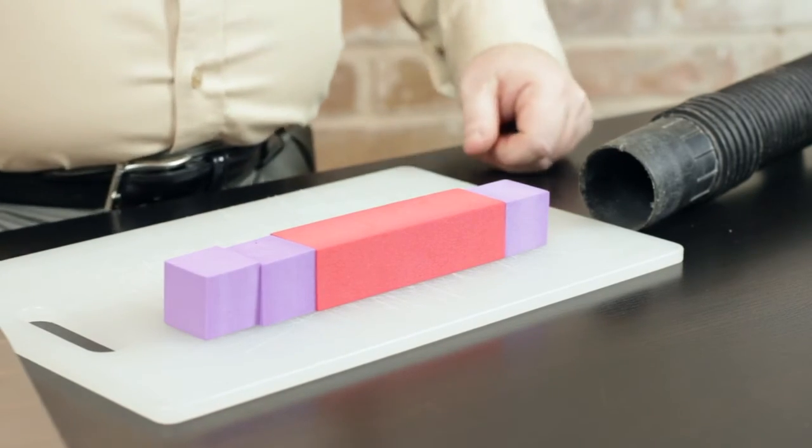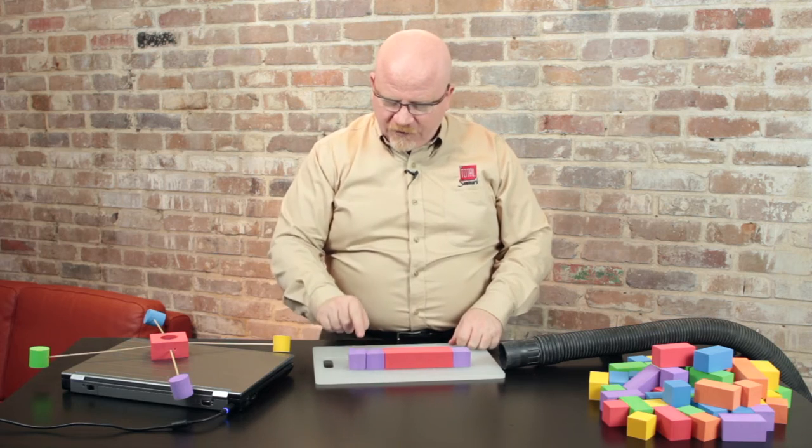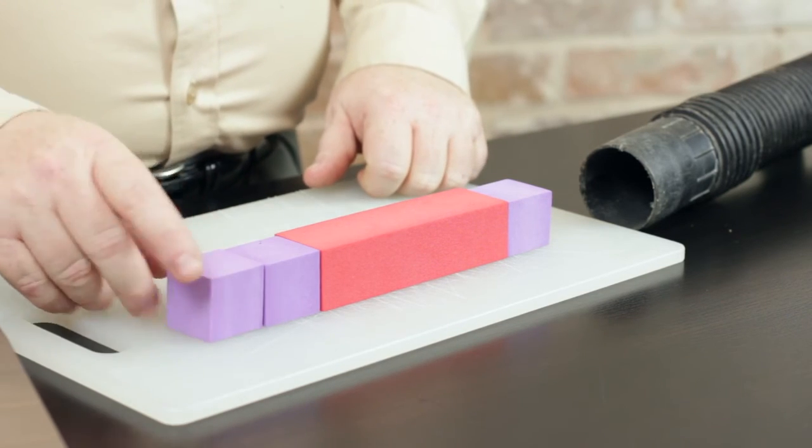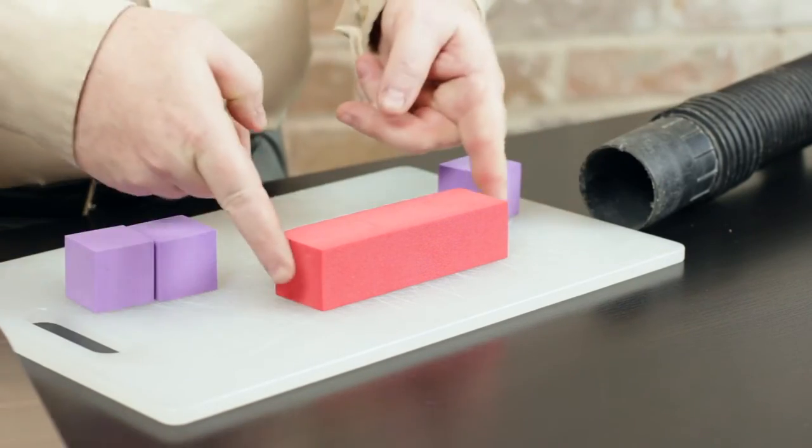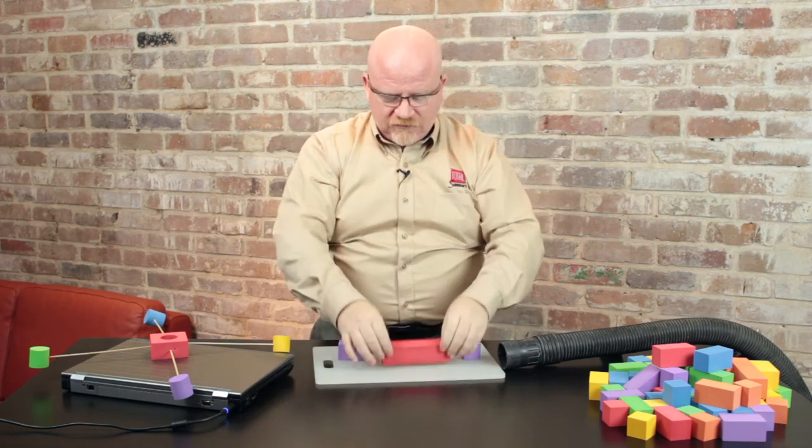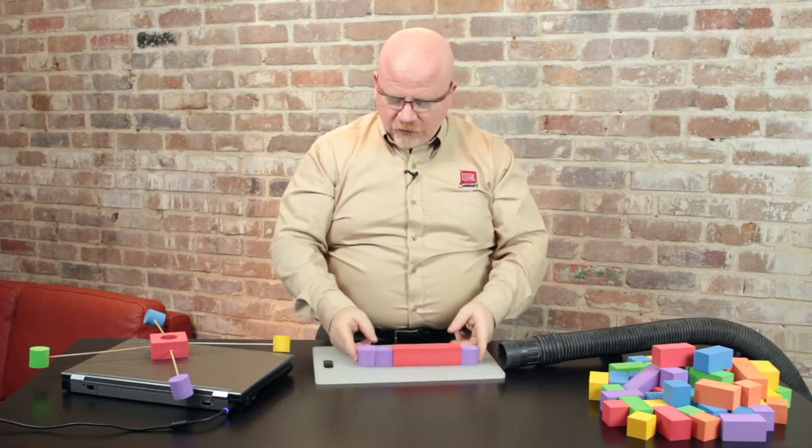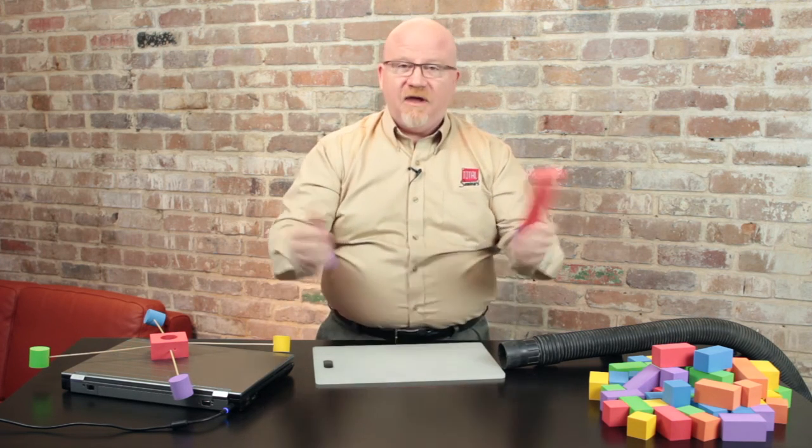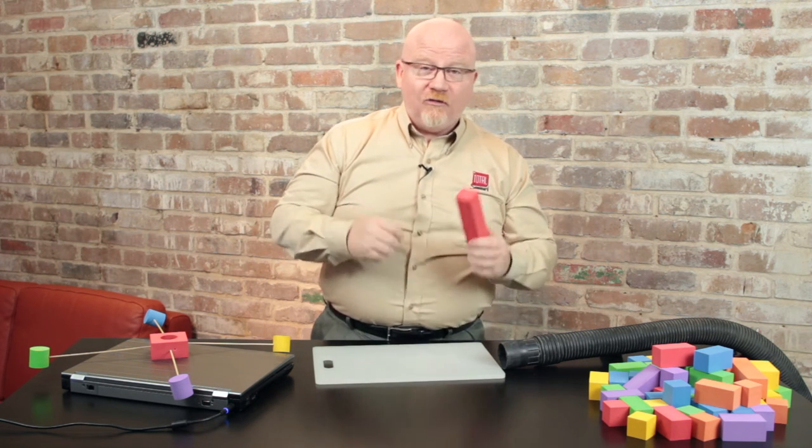And the cool part is that every network card knows what its MAC address is. So, the card looks at this, if it's a MAC address for him, then it's going to strip away all this extra information and send it up into the software of the system. However, if it's a MAC address that's not for him, he'll look at it, see it's not his MAC address and he just makes it disappear and doesn't do anything with it. And that is how MAC addresses work.